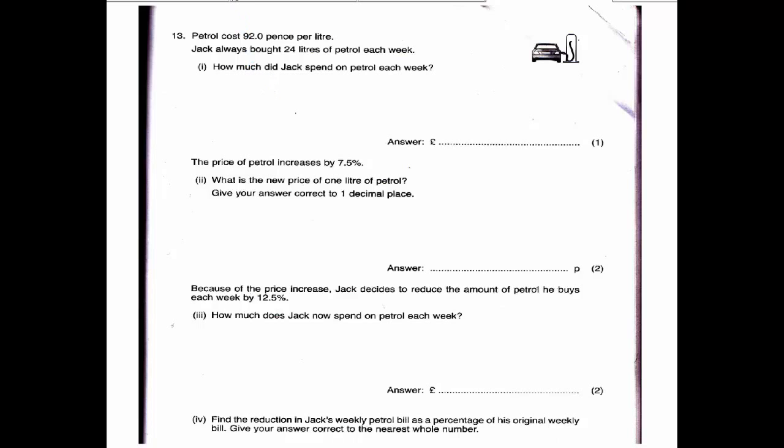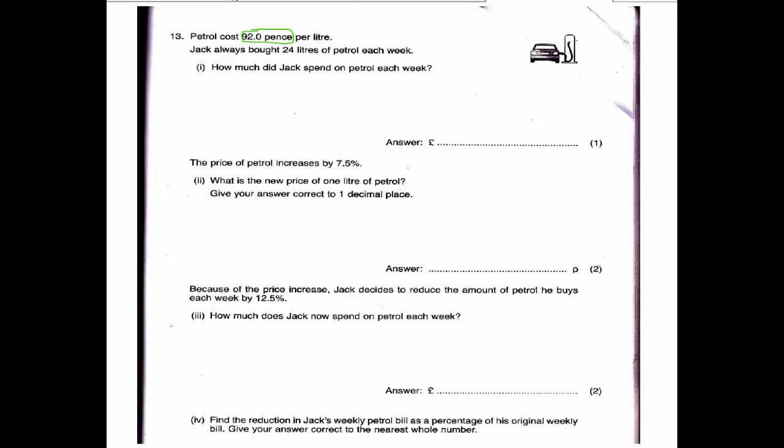So we have the 92 pence per litre and 24 litres that he used. One little thing we have to bear in mind is that the answer is actually in pounds. So instead of calling that 92 times 24, we'll turn that into pounds straight away. So that's going to be 0.92 multiplied by 24. We're actually allowed a calculator for this question, so that gives you £22.08.